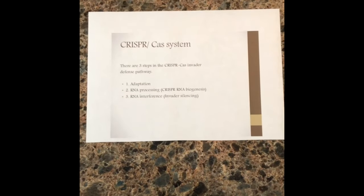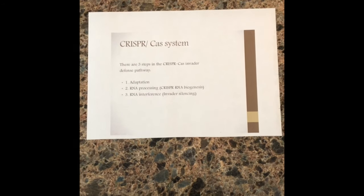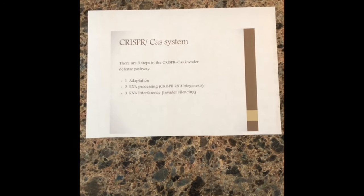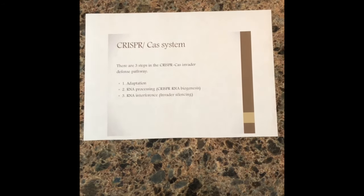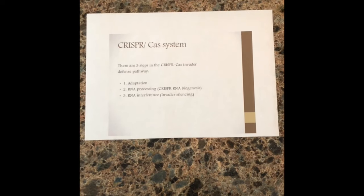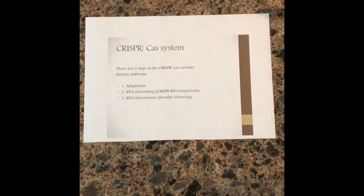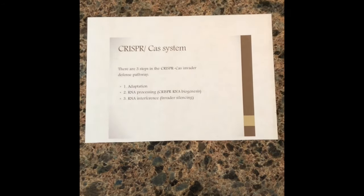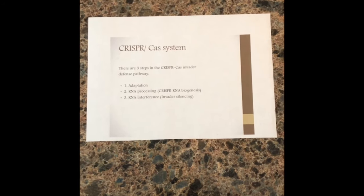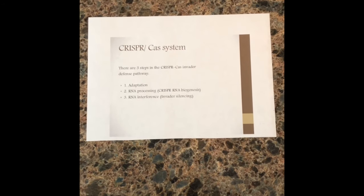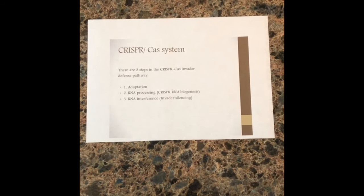The CRISPR-Cas system is a prokaryotic immune defense mechanism to cleave invading DNA, but has recently been used for eukaryotic gene editing. The first step involves adaptation. The system starts by inserting invading phage and plasmid DNA segments into CRISPR loci. This system is then adapted to target other genomes to allow for genome editing.